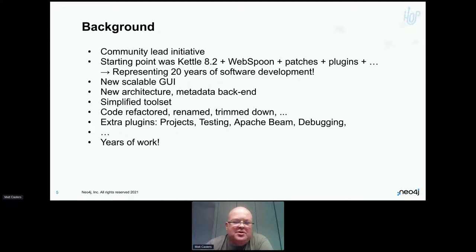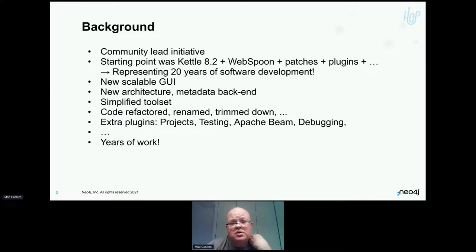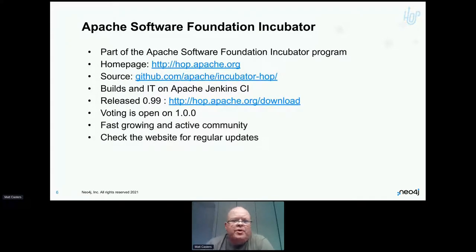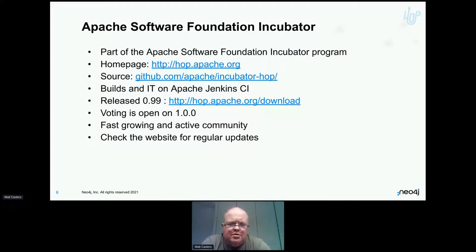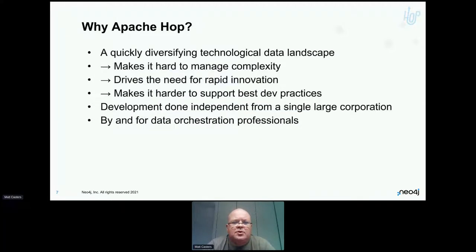We added a whole bunch of plugins to the ecosystem for project management, environment lifecycle management, unit testing, the whole of Apache Beam, debugging capabilities — years of work. We're part of the incubator program; you can find us at hop.apache.org. We released 0.99 a month ago and fixed 130-something bugs, and now we are voting on 1.0, which is our first stable release. We have a fast-growing, active community.